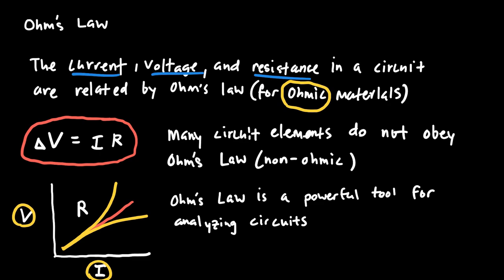Even things that are non-ohmic might be ohmic for a certain range of currents and voltages. For example, even non-ohmic elements pretty much follow a linear trend at small current. Resistors and light bulbs tend not to be very ohmic because they heat up, changing their resistance, but at small currents they don't heat up much and are fairly ohmic — so we can use Ohm's law to calculate voltage, current, or resistance.